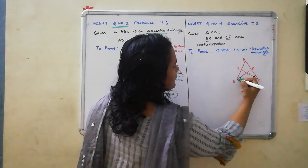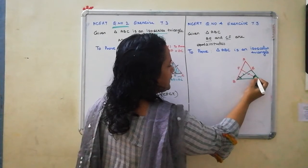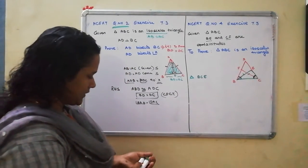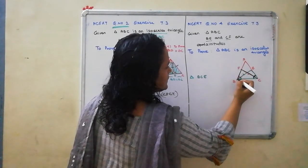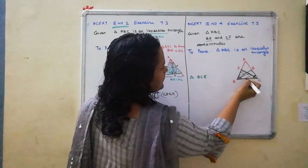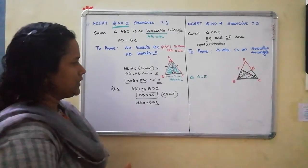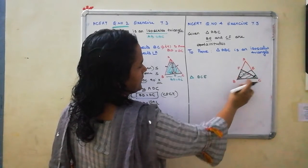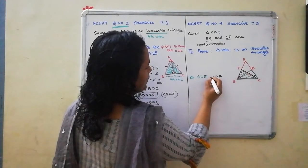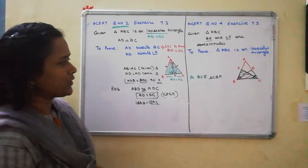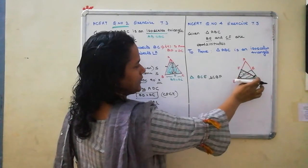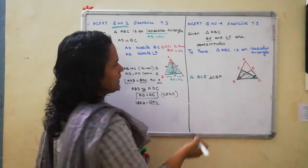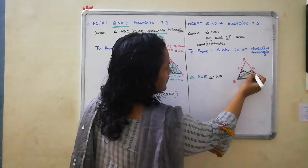Triangle BCE consists of the whole angle C. And I am also taking triangle CBF, which consists of the whole angle B. These 2 triangles — BCE and CBF — we are going to prove are congruent. Once we prove congruence, the triangles will be equal, meaning the sides will be equal, AB equal to AC, which gives us the isosceles triangle. Since they are altitudes, they consist of 90 degrees.